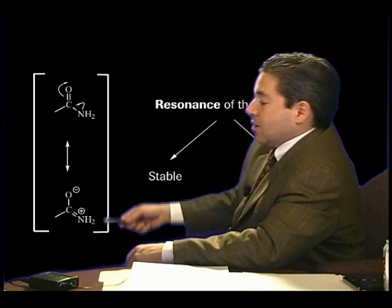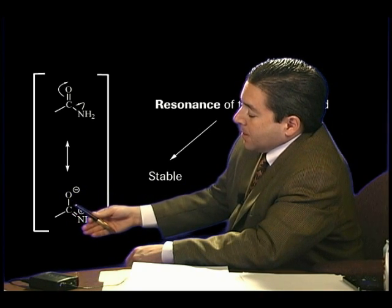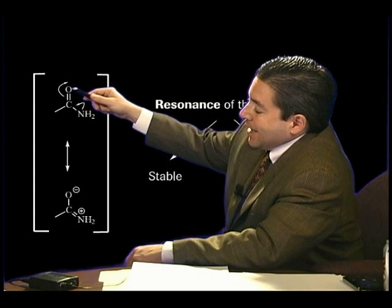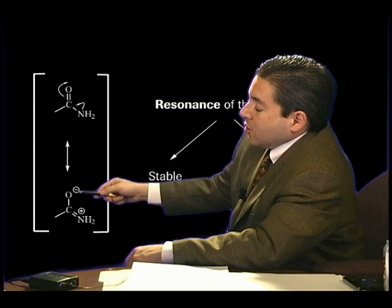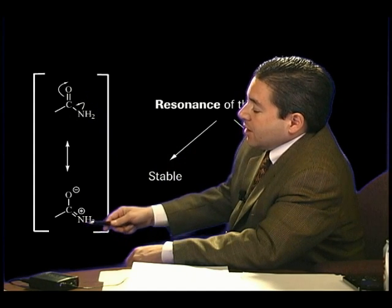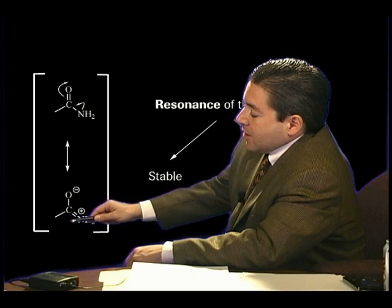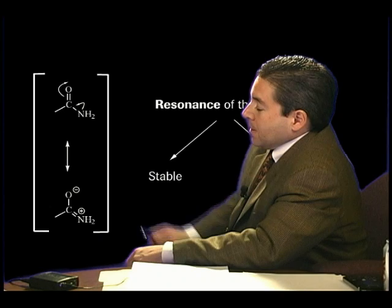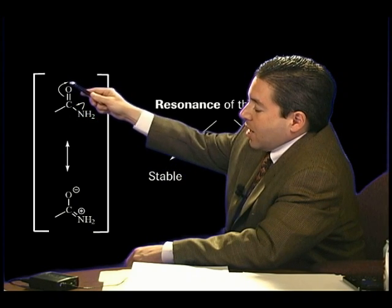The second resonance form — which is the minor resonance form (this is the major one; this is minor but not insignificant) — shows a doubly bonded carbon-nitrogen entity. To create that resonance form, the lone pair of nitrogen comes down to form the double bond with the carbon, and the pi bond of the oxygen goes out to form an extra lone pair on the oxygen, creating a charge distribution or dipole. So in an amide, the oxygen is actually slightly more negative than a normal carbonyl, and the nitrogen is slightly more positive than an amine. The other implication is that there is some double bond character to this carbon-nitrogen bond. The amide is a resonance structure in which there is delocalization of electrons over the three atoms: the oxygen, the carbon, and the nitrogen.